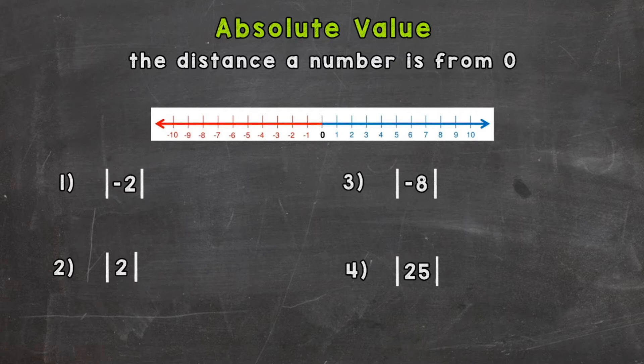So let's jump right into number one here and we have negative two. Now these bars here that are around the negative two, that just means the absolute value of negative two. And it's to shorten so you don't have to write out the words the absolute value of negative two. We use those bars as a symbol.